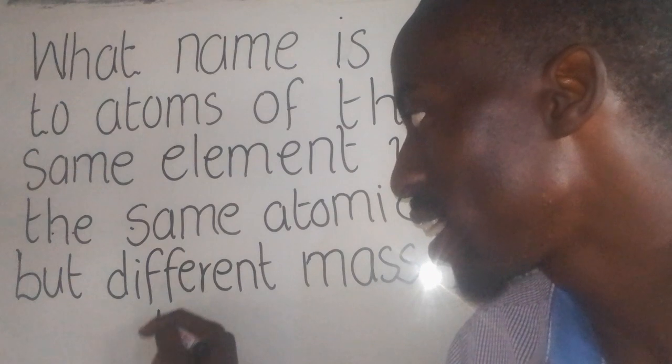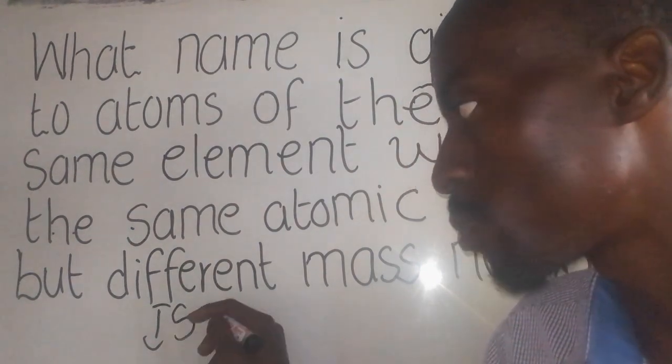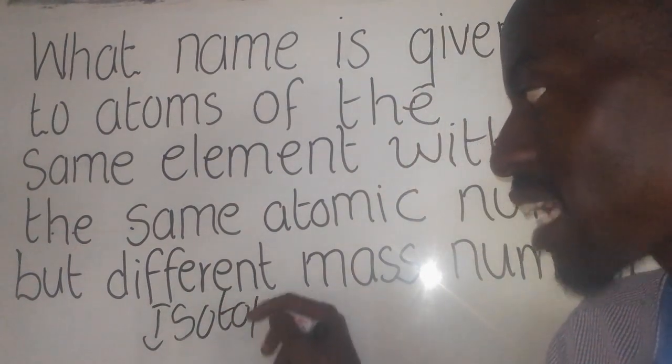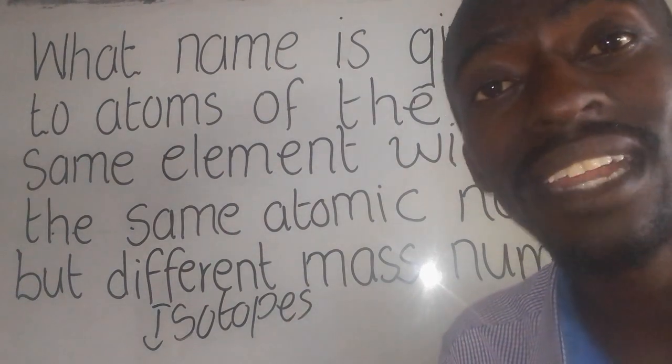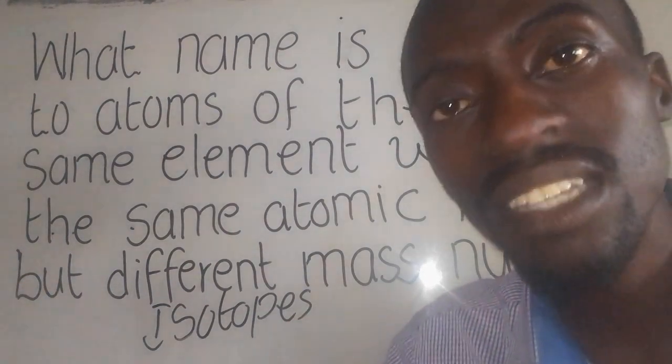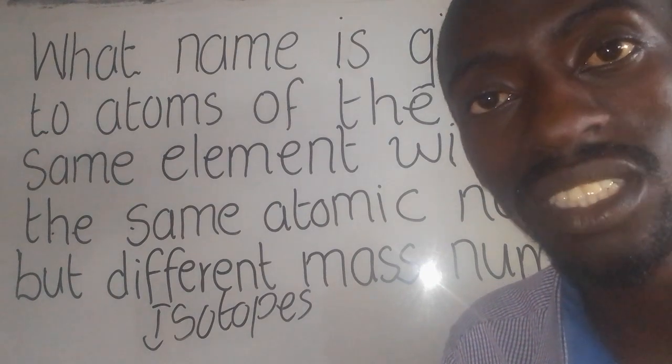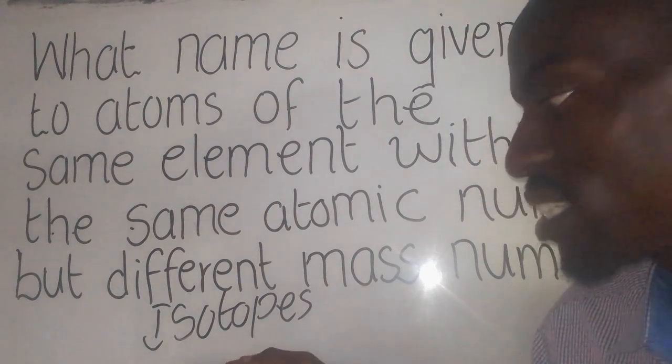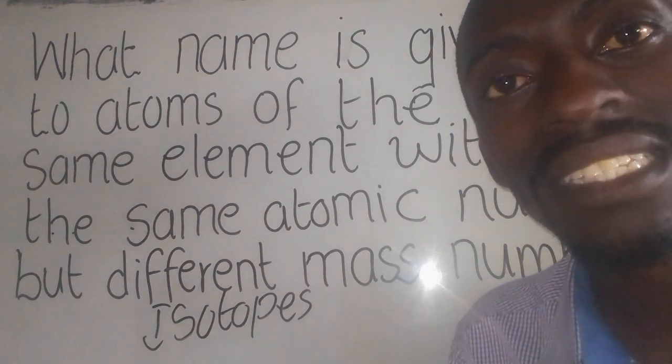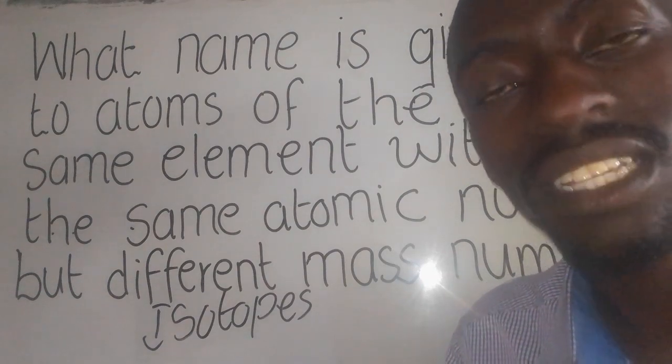So the answer here is isotopes. Isotopes are special atoms that are formed under radioactivity, the releasing of energy. Now these isotopes may exist in some certain elements, for example hydrogen.